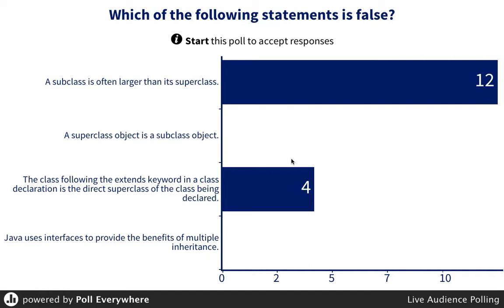A subclass object is always a superclass object — always. C: the class following the extends keyword in a class declaration is the direct superclass of the class being declared. That's not false — that's absolutely true. For example, villain extends hero, so hero is the direct superclass of villain. That is true.